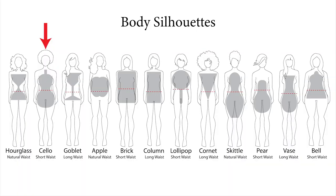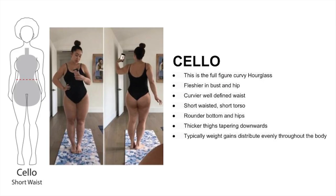Next is the cello shape, which is the sister to the hourglass. Here are the key features: it's a curvier, full-figure hourglass with fleshier busts and hips, a well-defined curvy nipped-in waistline. The proportion is short-waisted with a short torso. The hips are rounder with a generous behind, and thicker thighs tapering downwards.